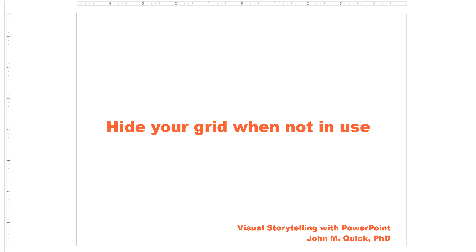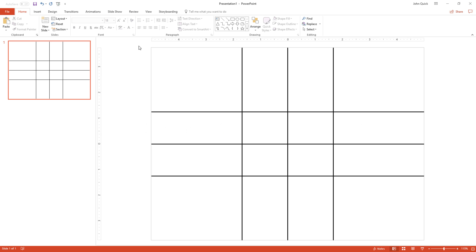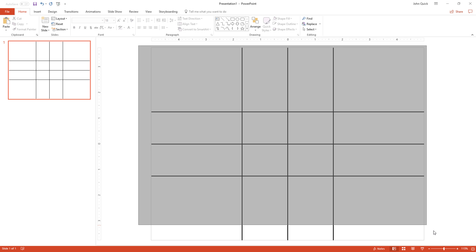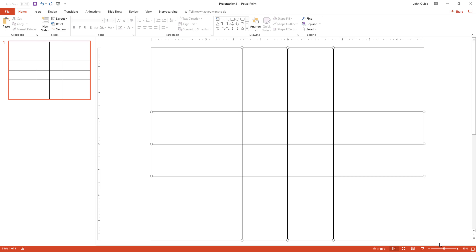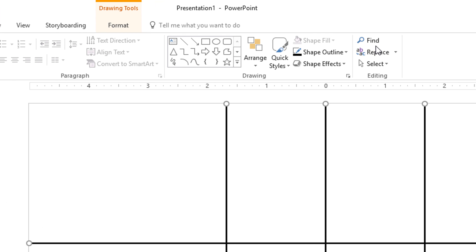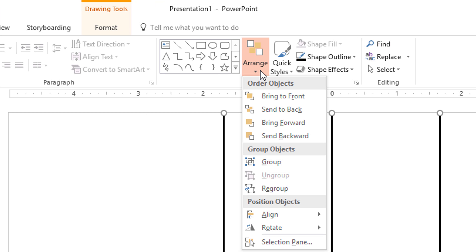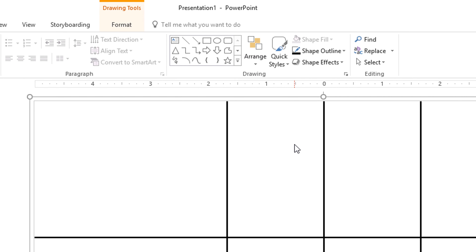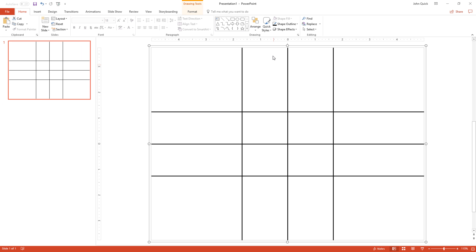It's time to learn! Click and drag to select all the lines in your grid. Go to Arrange, Group. Now the lines all belong to a single group.